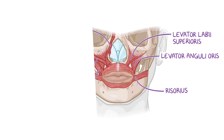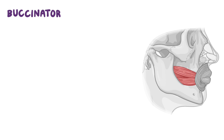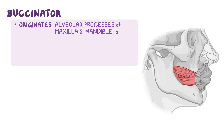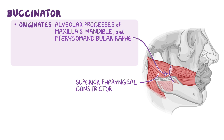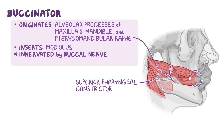Let's look at one final facial muscle called the buccinator. The buccinator is a rectangular muscle found deep in the cheek. It originates on the alveolar processes of the maxilla and the mandible and the pterygomandibular raphe, which is a thickening of the buccopharyngeal fascia. The superior pharyngeal constrictor originates on the posterior side of the pterygomandibular raphe, while the buccinator originates on the anterior side. The buccinator extends anteriorly, where its fibers mingle with the fibers of the orbicularis oris muscle, and inserts on the modiolus. It is innervated by the buccal nerve, and its main job is to press the cheek against the teeth, like when drinking from a straw.